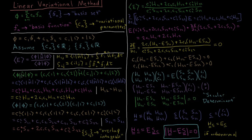For the numerator, we expand the integral in terms of our trial wave function phi. That gives us (c1 bra-1 plus c2 bra-2) times H times (c1 ket-1 plus c2 ket-2). When we FOIL that out, because H is a linear operator, we get four individual integrals: c1-squared times <1|H|1>, plus cross terms c1 c2 <1|H|2> and c2 c1 <2|H|1>, plus c2-squared times <2|H|2>.